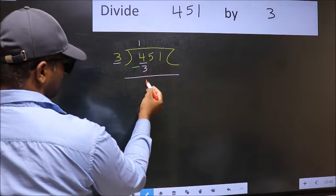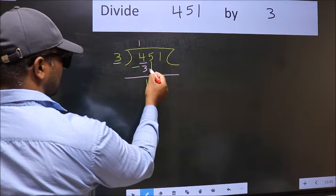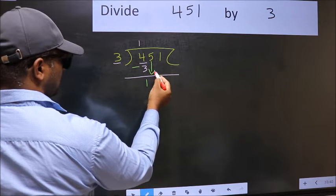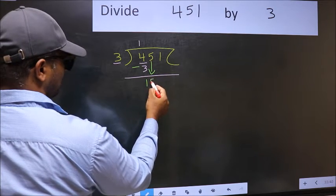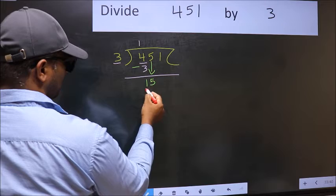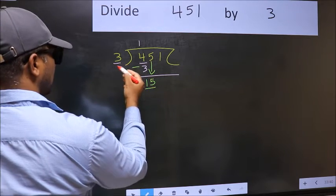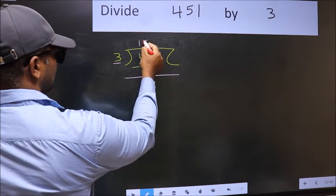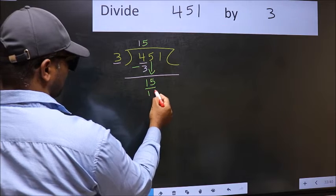After this, you bring down the beside number. So, 5 comes down. Now we have 15. When do we get 15 in the 3 table? 3 fives = 15.